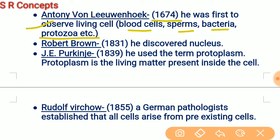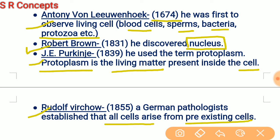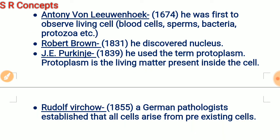The next important discovery was done by Robert Brown, who discovered the nucleus of the cell. After that, J.E. Purkinje in 1839 stated that every cell has a living matter inside it, and this living matter was called protoplasm. Next, Rudolf Virchow, a German pathologist, established that all cells arise from pre-existing cells. These are the important discoveries you should memorize.